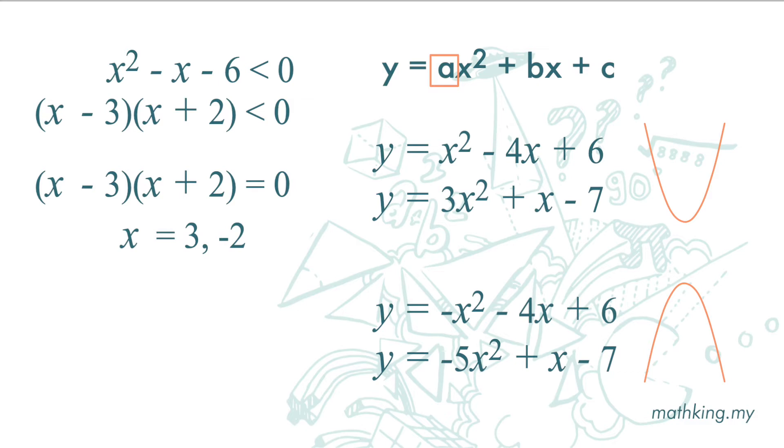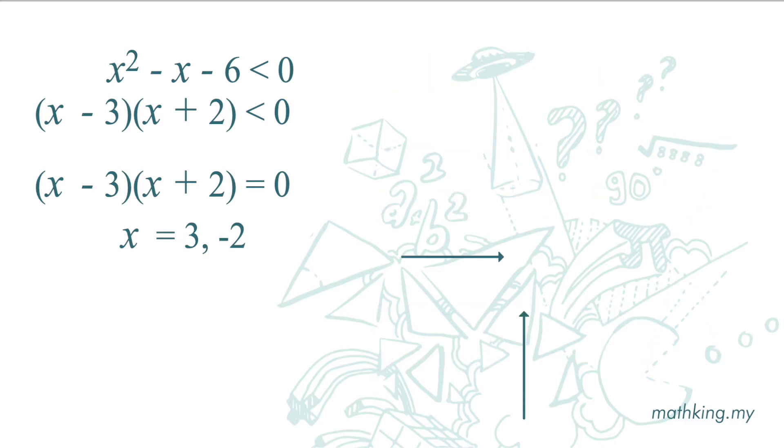We will learn more about the shape of the quadratic function in later section. For now, just remember this. So now we are going to sketch the graph. X square - here, a is positive, so the shape is like this. The value of x where this equation is 0 is negative 2 and 3. So we mark negative 2 and 3 on x-axis. So we get a graph like this.